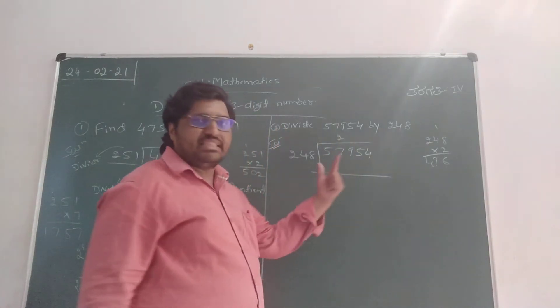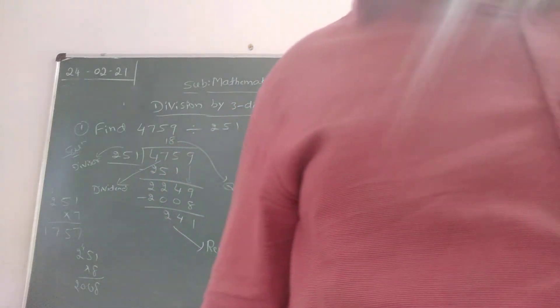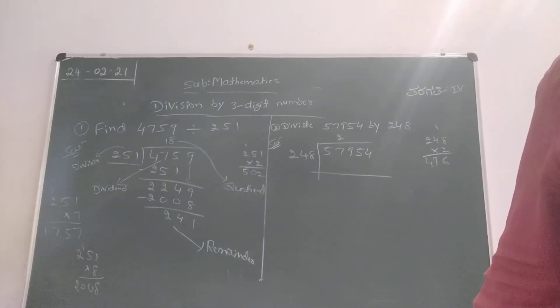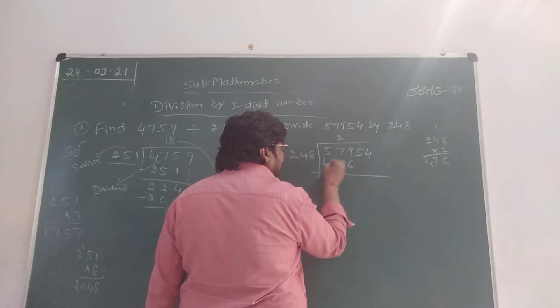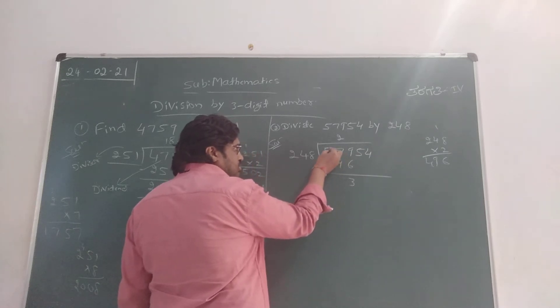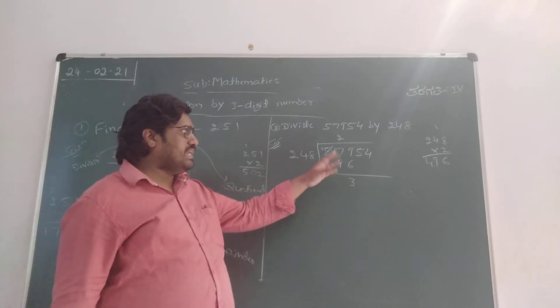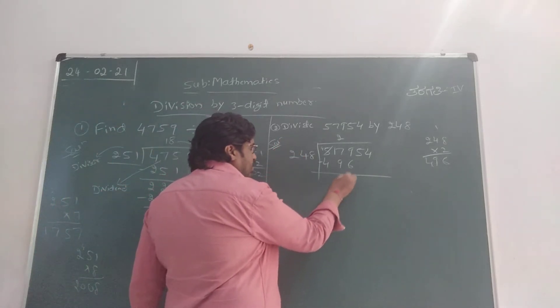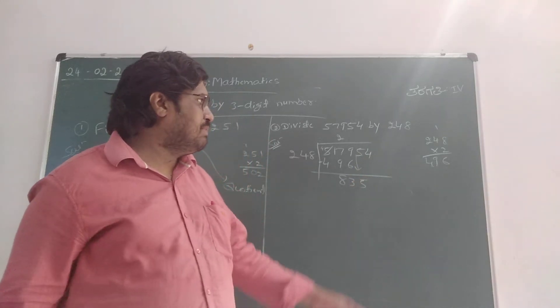You can take 248 times 2, because 248 times 3 is more than 579 children. So you have to take 248 times 2, which is 496. Subtract here: 9 minus 6 is 3. 7 minus 9 is not possible to subtract, so I am going to take 1 borrow from 5. Then it becomes 17 minus 9 is 8. 4 minus 4 is 0. Then you have to bring down the next number which is 5, then it becomes 835.